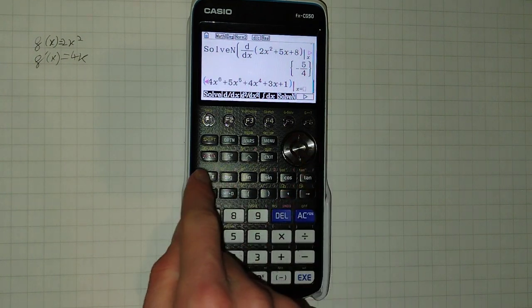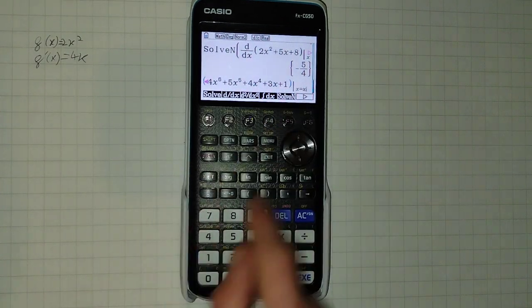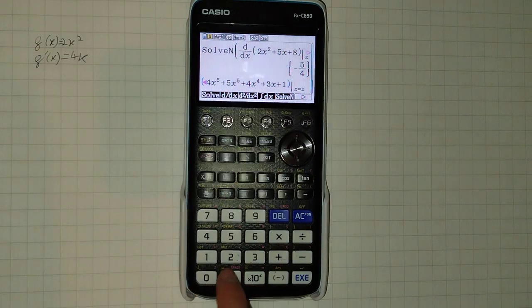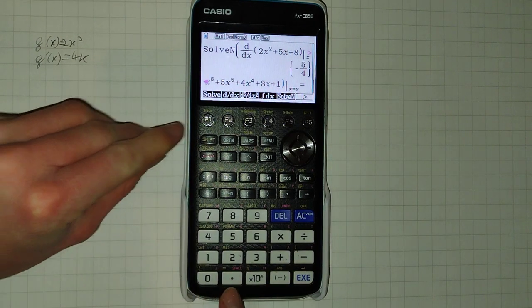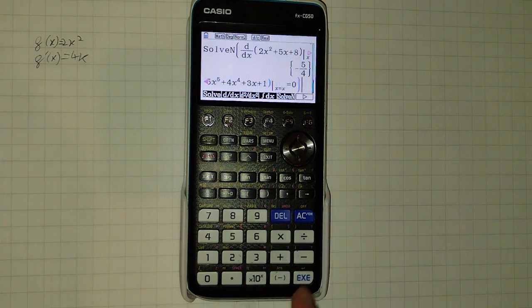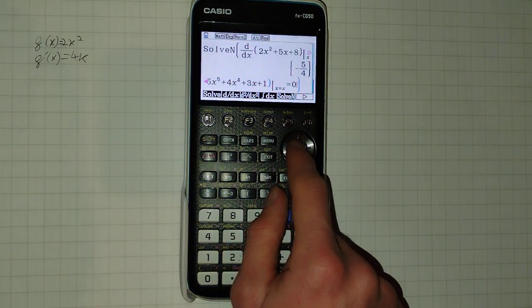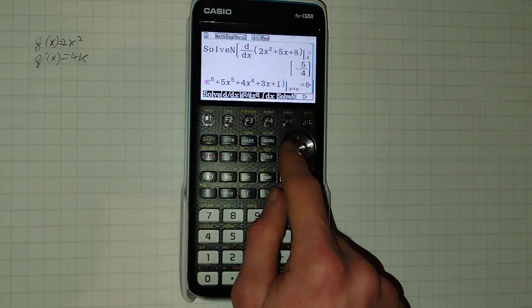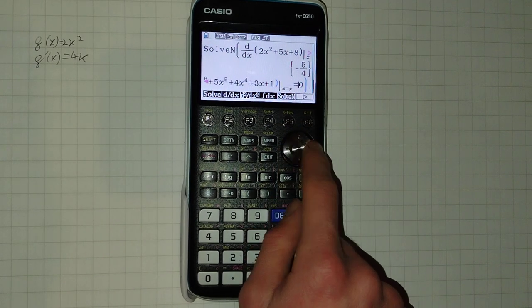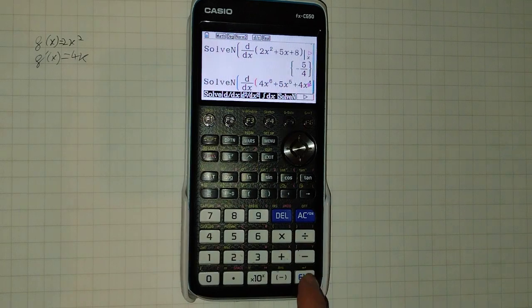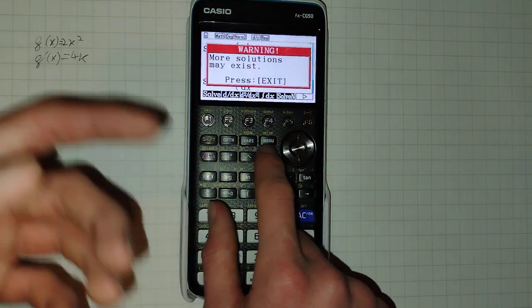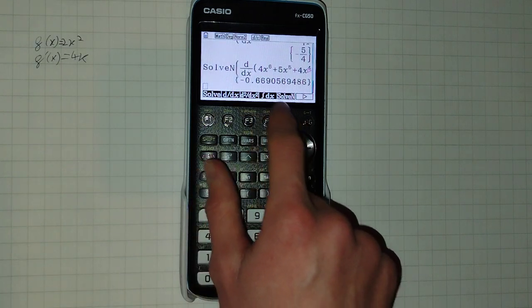And then we're going to put in x equals x, because we want it to solve for x, tell us the value of x at which this equals, by the way, equals is shift dot down here, zero, close the bracket. And we've got a syntax error. Why did we go wrong? Ah, yes, I forgot to put in Solve all the way on this side. After hanging for a second, because it's more complex.